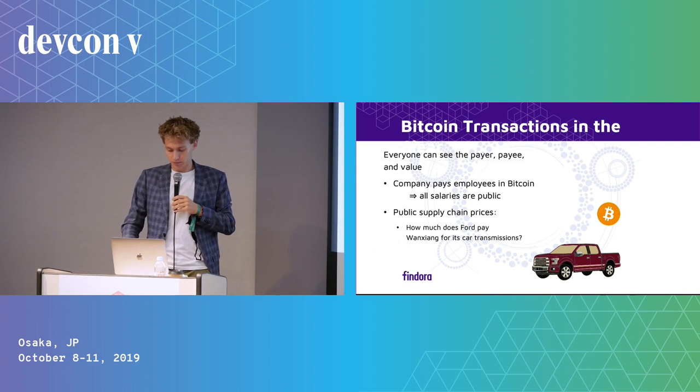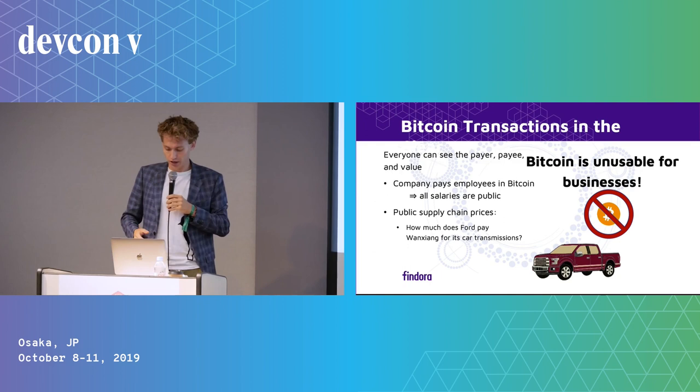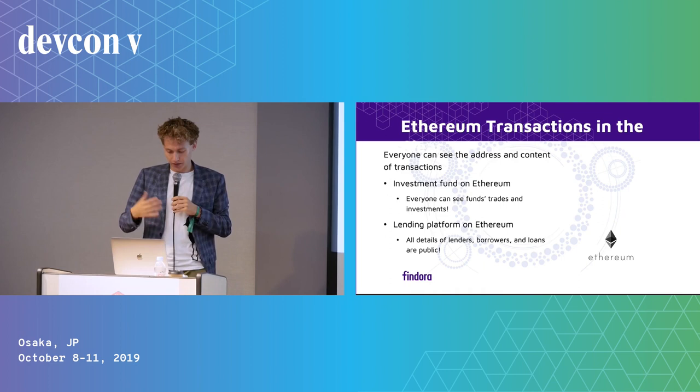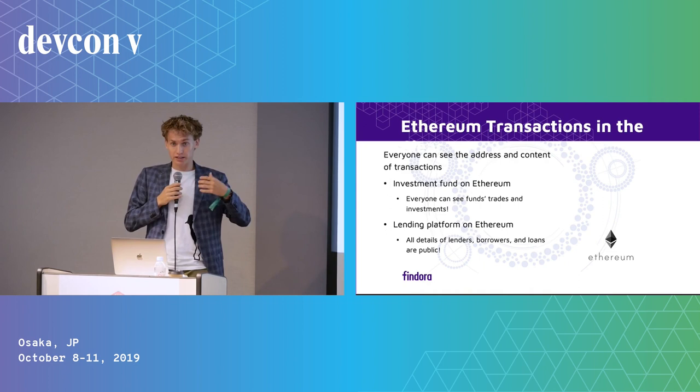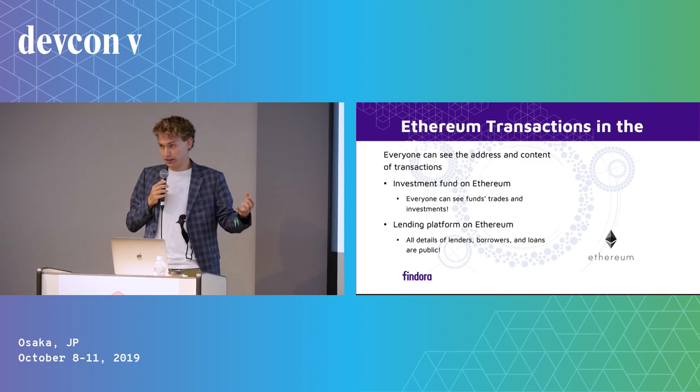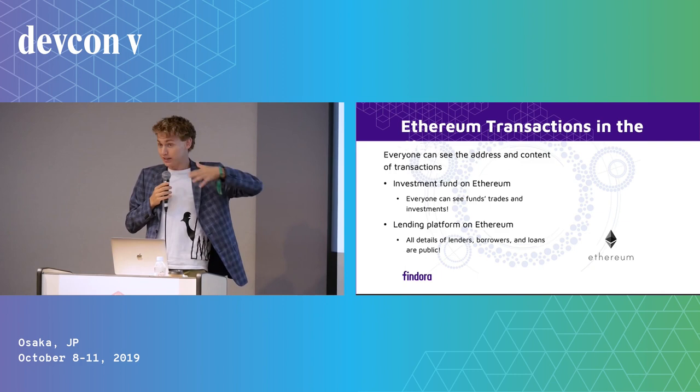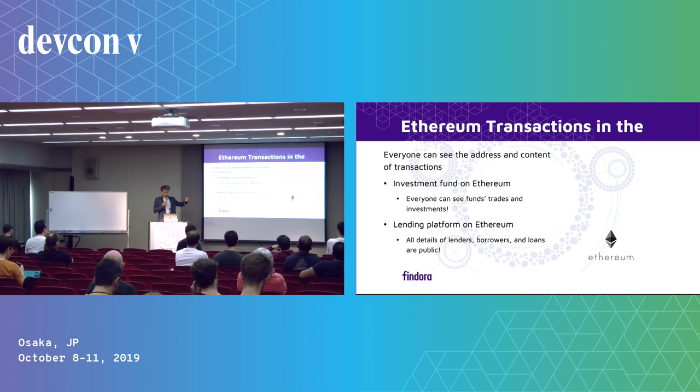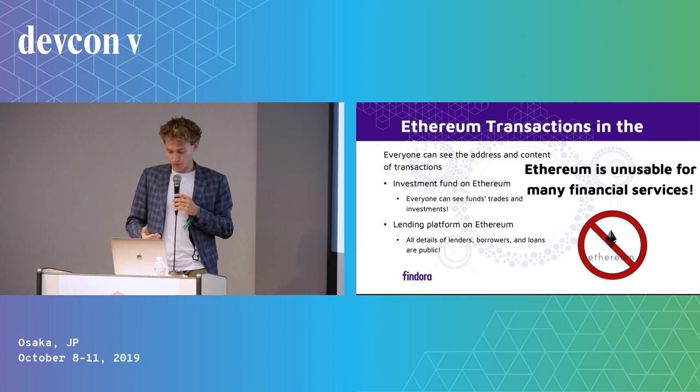This leads to the maybe slightly controversial statement that Bitcoin, in the way it works now, is really unusable for businesses. Similarly for Ethereum — if I run an investment fund on Ethereum, then everybody can see exactly what my investing strategy is. My whole secret sauce is my investment strategy, but if the fund is on a platform like Melon, everybody can see exactly what I'm investing in, they can front-run me, and that creates all sorts of problems. Ethereum is unusable for many financial services.